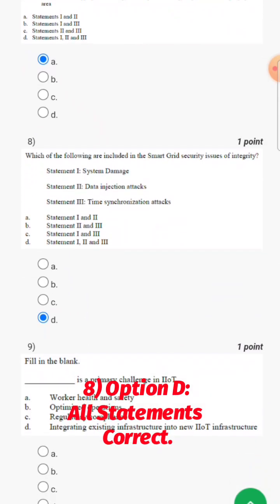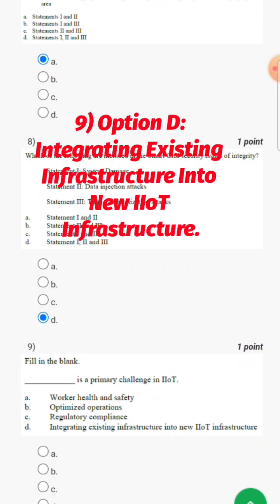Then we have question 9, fill in the blanks. Blank is a primary challenge in IIoT. So here answer will be integrating existing infrastructure into new IIoT infrastructure.